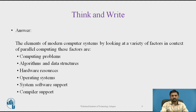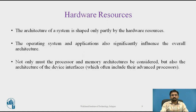The architecture of a system is shaped only partly by hardware resources. The operating system and applications significantly influence the overall architecture. Not only must the processor and memory architecture be considered, but also the architecture of the device interfaces. Based on the hardware architecture, we choose the operating system — the operating system is designed based on the hardware architecture.